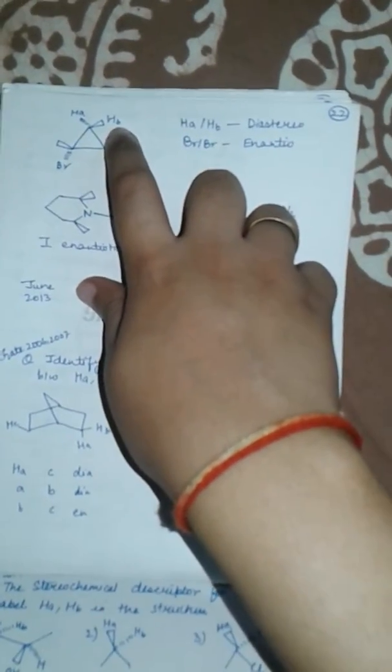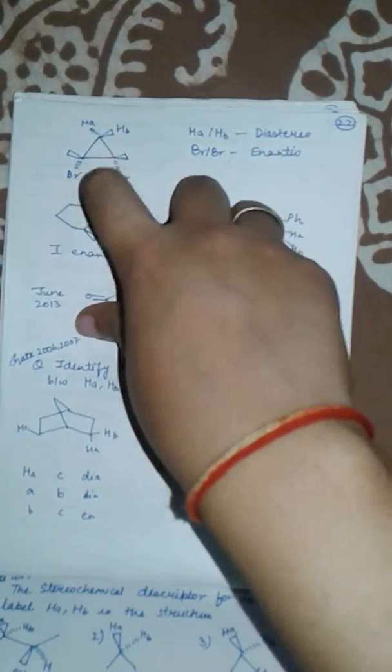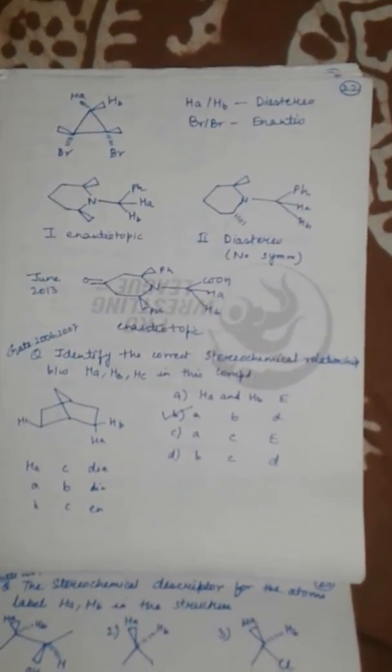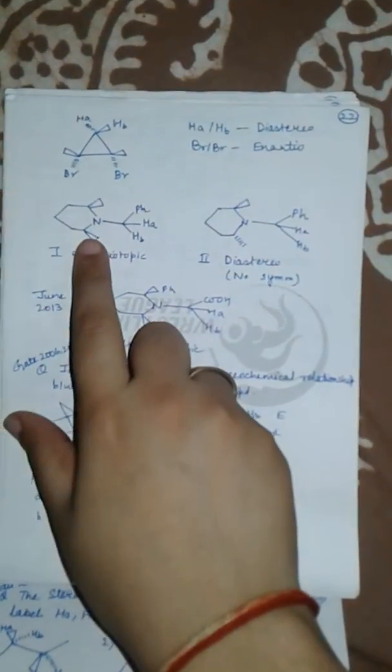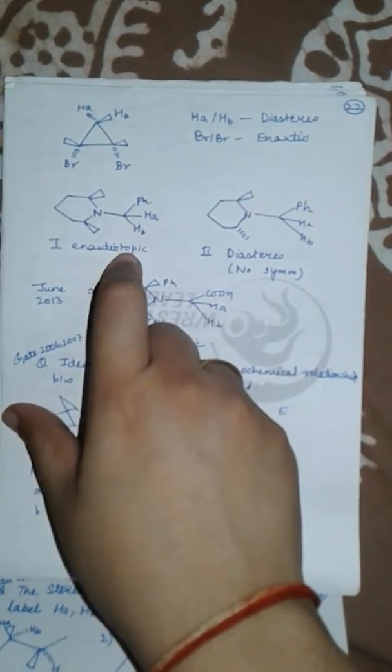In this one, H_A and H_B are diastereotopic, and the two bromines are enantiotopic. When the axis is passed, they are bisected, but these are reflected in the first compound.